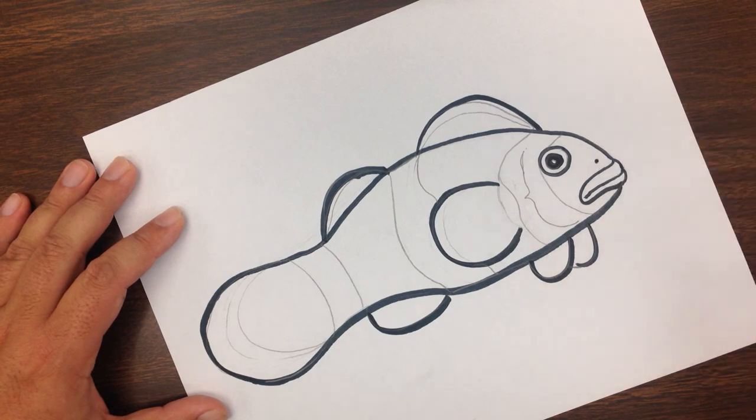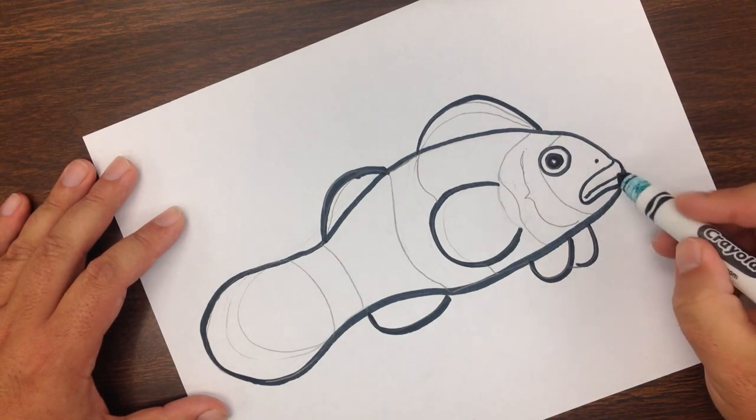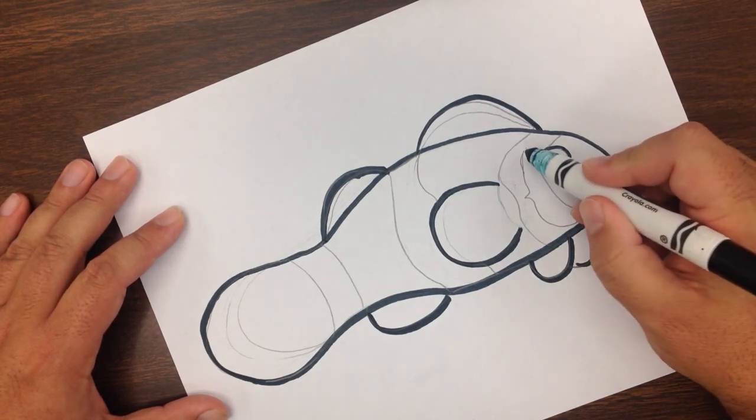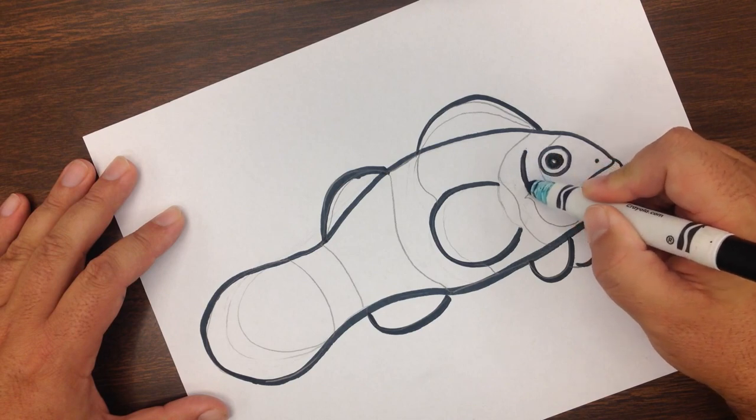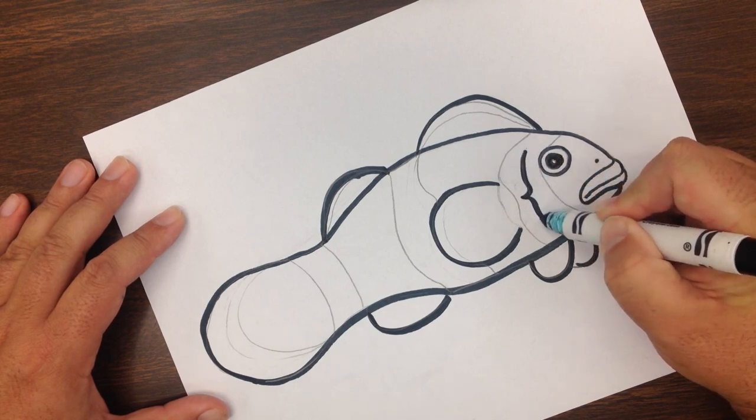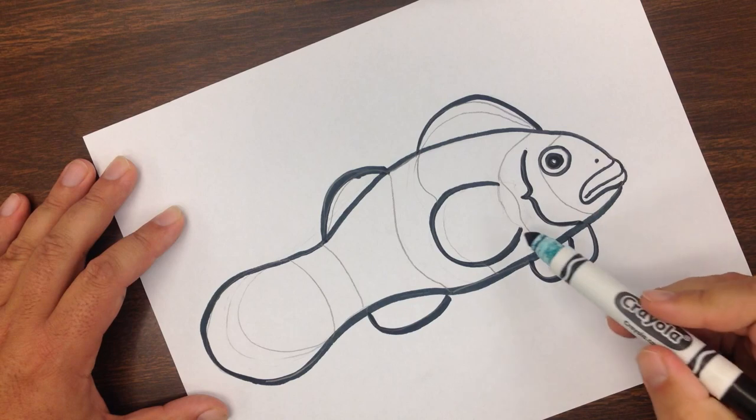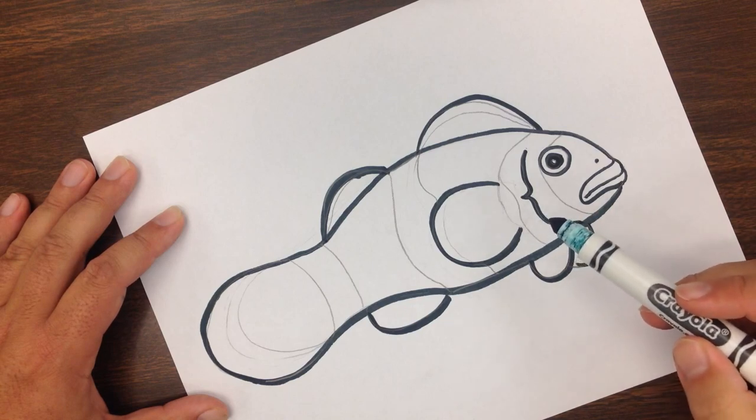Next, we'll go ahead and put a little dot for the nostril here, just above the upper lip. And then the gills are kind of unique on a clownfish because there's a little spike that sticks out here at the edge of each one.